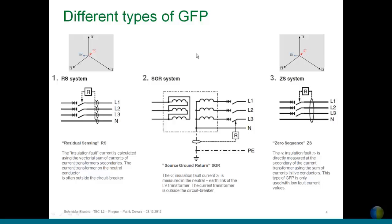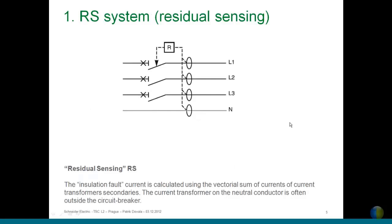Note that the SGR type is not really based on the vectorial sum. The third type is very well known — it's in all our homes — the zero sequence, provided by a toroid transformer. All working phases plus the neutral, if distributed, are included in one toroid current transformer, and we sense the fault current through this.